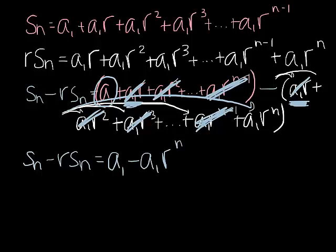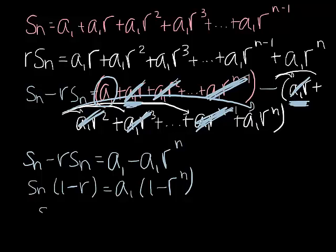Now remember that I'm trying here to solve for the finite sum. So my goal is to get s sub n by itself. So let's do some factoring. Hopefully you agree with this step here. And if I want to get s sub n alone, I just divide by 1 minus r. And there's my formula.